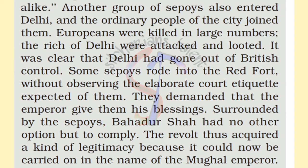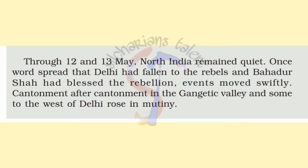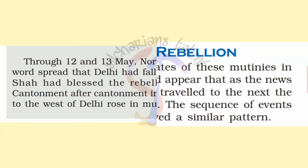As more people came to know about the support of Bahadur Shah, events took place rapidly. Cantonment after cantonment in the Gangetic Valley and some areas west of Delhi rose in mutiny too. The year 1857 has great importance in Indian history — it witnessed a great event which provided a new momentum and new direction to the struggle against colonial rule, coming to be known as the great uprising of 1857 and also as the First War of Independence.